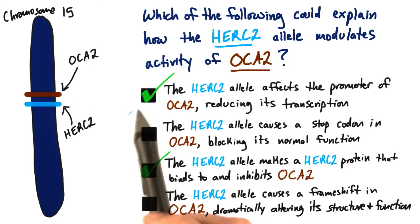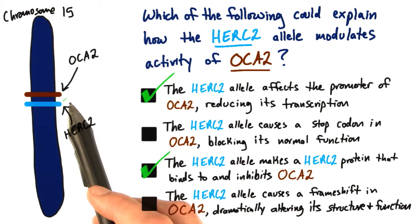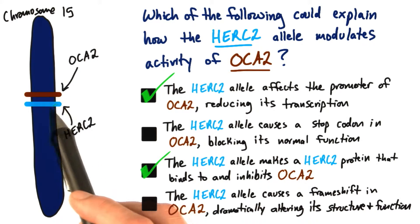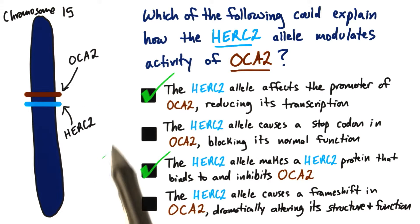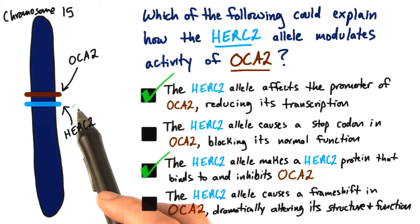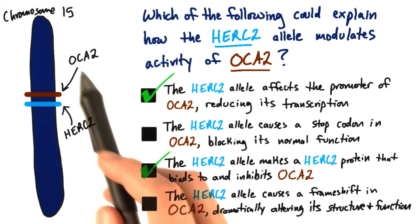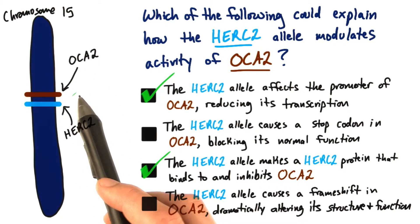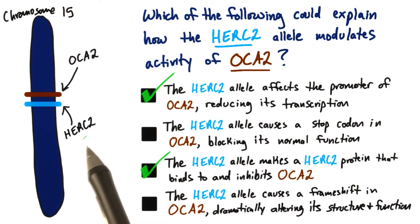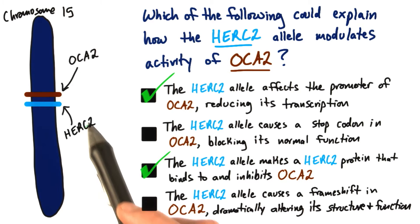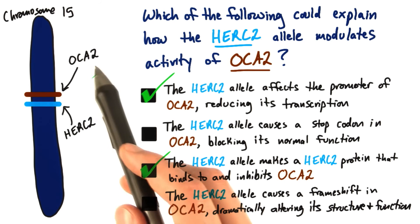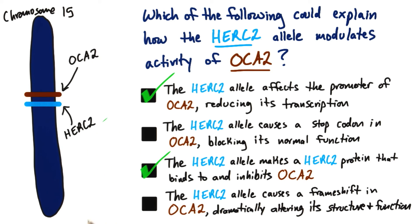The two options that are left are: we know that non-coding regulatory regions of the OCA2 gene surround the gene and can even be thousands of base pairs away. So a mutation in the HERC2 gene could actually be in one of the non-coding regulatory regions of OCA2 that reduces its transcription. The other alternative is that we actually change the HERC2 protein itself, and the HERC2 protein physically interacts with the OCA2 protein elsewhere in the cell, and inhibits or reduces its activity. Both of those are plausible.